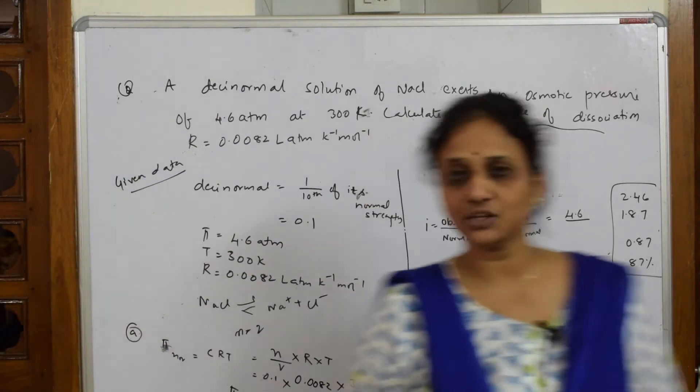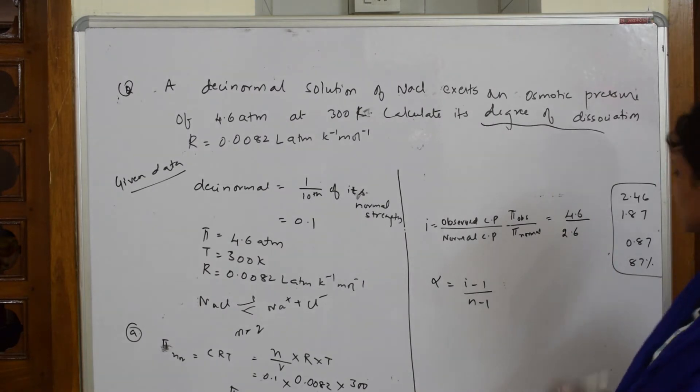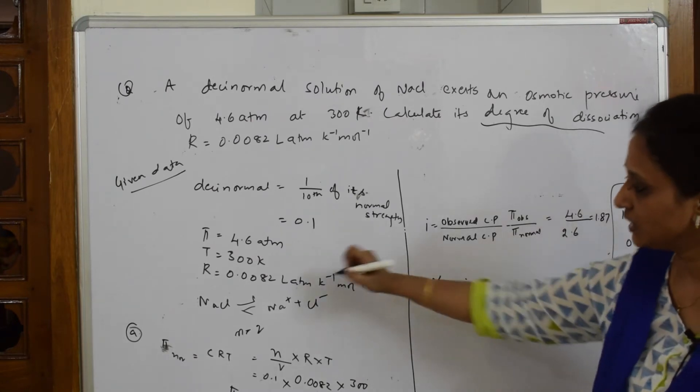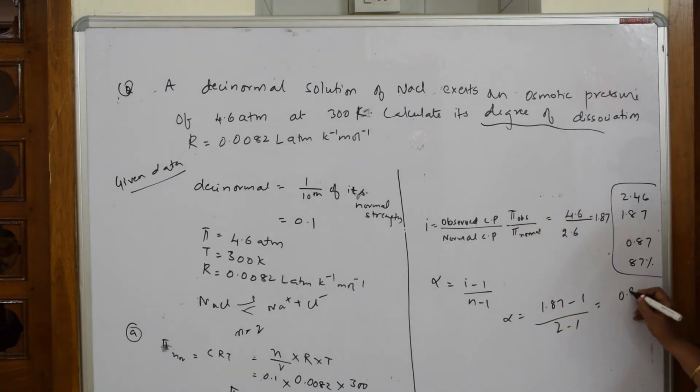Now come back and use that π here. π observed is 4.6, π normal is 2.46. When I solve I get an answer of 1.87. Now substitute in this formula. Alpha is equal to I have got i, that is 1.87 minus 1. What did I get? N value I got it as 2, 2 minus 1. Here total when I solve I get an answer of 0.87.